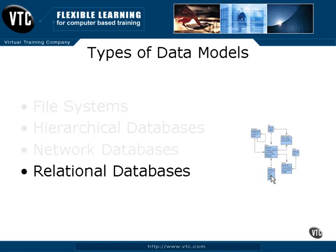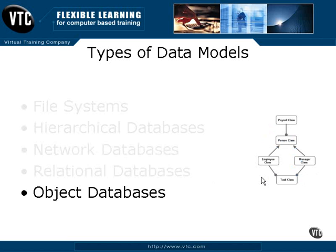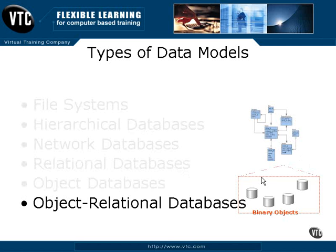The next step up was a relational database. A relational database allows essentially links between any entity within the structure and access to any entity from outside of that structure by a computer programmer. An object database created a database structure with an object structure, where you have interesting things such as inheritance, abstraction, and specialization. An object-relational database was really initially an answer to relational database vendor competition, or the threat of competition from newly introduced object databases, where the relational database vendors included certain object aspects within relational databases, but the underlying structure is still relational.